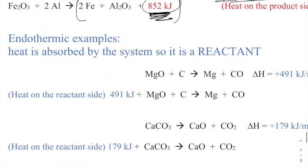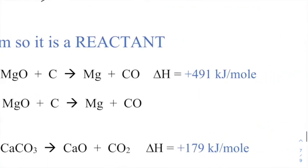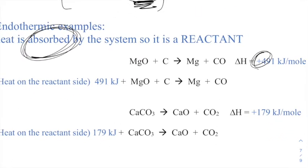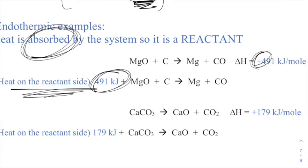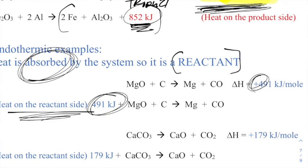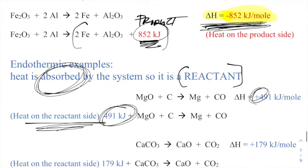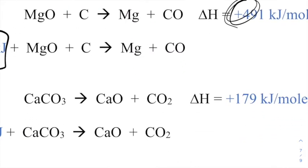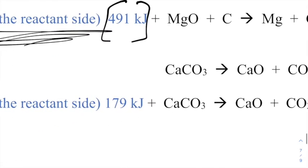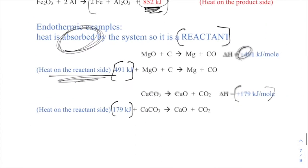If it's an endothermic reaction, heat is absorbed by the system, giving a positive delta H, and the heat appears on the reactant side. For example, one reaction requires 491 kilojoules per mole on the left-hand side. To decompose limestone, you need to put in 179 kilojoules per mole, so that 179 goes on the reactants side of the equation.